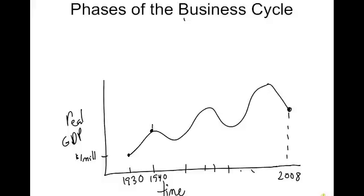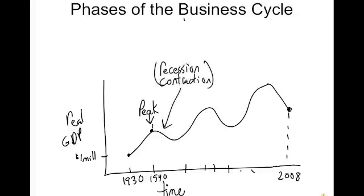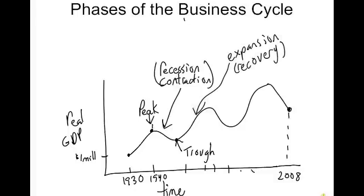There are different parts to the business cycle. The very tip of the business cycle is called the peak — that's where it stops increasing and starts to decrease. The decrease in real GDP is called a recession, or the contraction of the cycle. Right now most of the world is in a recession.